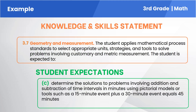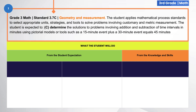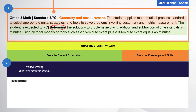Now let's practice deconstructing the math standard 3.7C using the STRIP protocol. First, indicate the standard you will be deconstructing. As you deconstruct, you will need to reference the standard to ensure that you clearly understand what is expected of students. Second, determine the what. To do this, refer to the student expectation and ask: what are students doing to demonstrate their learning? Then identify the action verb in the standard, as the action verb indicates the cognitive process students should engage in. Upon a closer examination of the student expectation in this standard, we see the verb determine is used to indicate what students are doing to demonstrate their understanding.